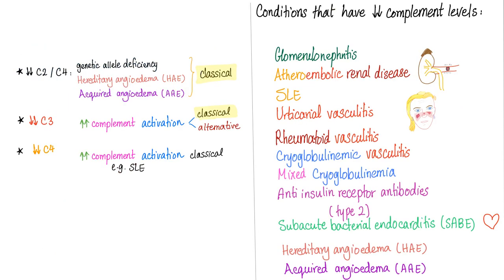We've talked about hypocomplementemia, or decreased complement level. Decreased C2 and C4 are seen in classical complement over-activation such as genetic allele deficiency, hereditary angioedema, and acquired angioedema. Decreased C3 indicates increased complement activation in the classical or alternative pathway. Decreased C4 indicates increased activation specifically in the classical pathway, such as in lupus.